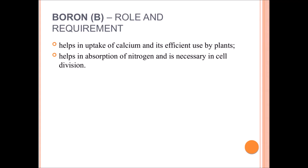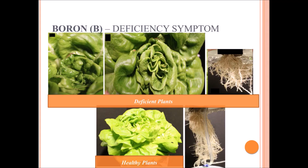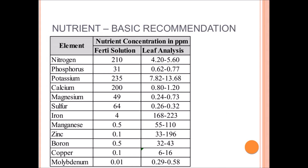Boron is a very essential nutrient for plant growth and for efficient calcium uptake by plants. Boron deficiency also appears on the apical part of crop growth. Calcium and boron are the two essential nutrients that are immobile in the plant and always show deficiency on the buds or apical part of the crop.